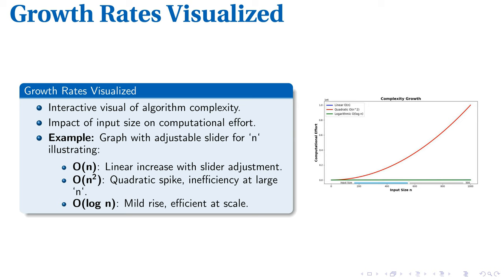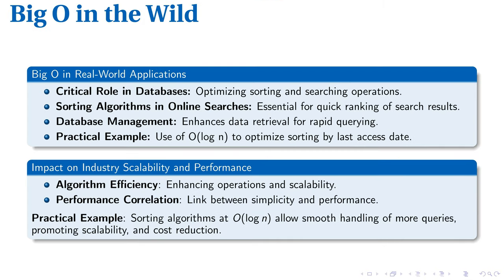As we advance, we'll dissect these complexities in detail, shedding light on their impact on algorithm performance. Big O notation is pivotal in real-world applications such as database systems, bestowing them with efficient sorting and searching capabilities. For instance, optimization of an online search algorithm can be achieved through smart ranking of search results, enabling quick retrieval of data. A prime example is O(log N) time complexity, significantly enhancing operations like sorting by last access date.